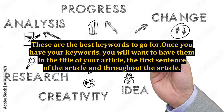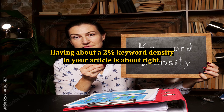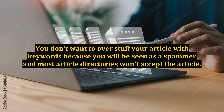These are the best keywords to go for. Once you have your keywords, you will want to have them in the title of your article, the first sentence of the article, and throughout the article. Having about a 2% keyword density in your article is about right. You don't want to overstuff your article with keywords because you will be seen as a spammer and most article directories won't accept the article.